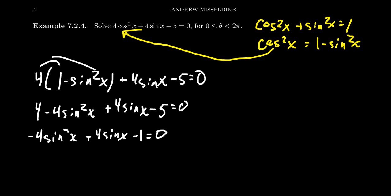I'm going to divide both sides by -1. I don't like the leading coefficient being negative. Dividing everything by -1, you get 4sin²x - 4sinx + 1 = 0.